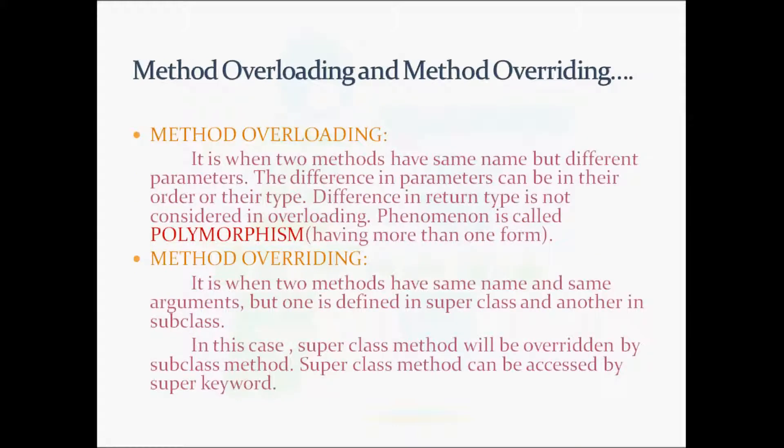Now let us understand the concepts of method overloading and method overriding. What is method overloading? It is when two methods have same name but different parameters. The difference in parameters can be in their order or their type. Difference in return type is not considered in overloading. And this phenomenon is called polymorphism. By polymorphism we mean having more than one form. Polymorphism is an important feature of object oriented programming.